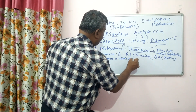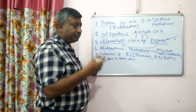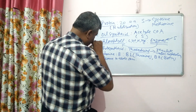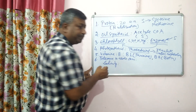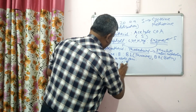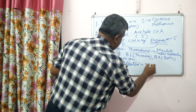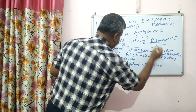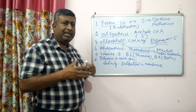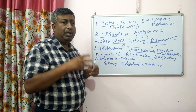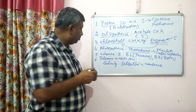Sulfur also provides tolerance to abiotic stress. Abiotic stress may be heat, drought, or frost. For example, in case of salinity tolerance, sulfur is present in biological membranes as sulfolipids — just as phospholipids are present in membranes, sulfolipids are also present. The amount of sulfolipid is positively correlated with salinity tolerance, so the more sulfolipid present, the greater the plant's salinity tolerance.